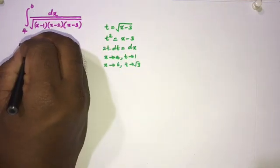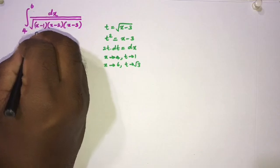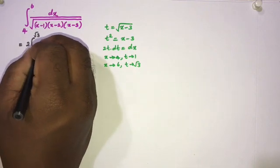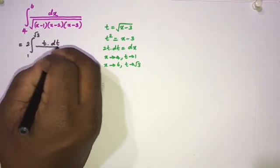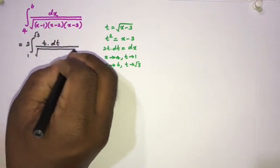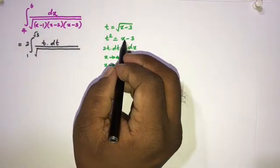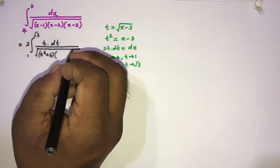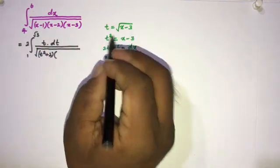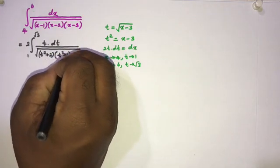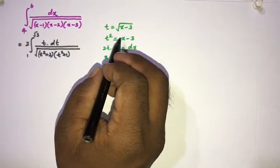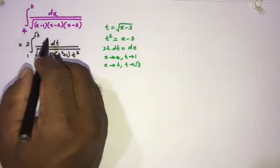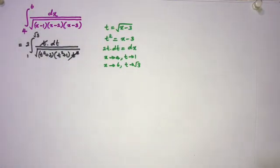The new limits are 1 to √3. Substituting, dx equals 2t dt, so we have 2 times t dt over the square root of (x minus 1)(x minus 2)(x minus 3). Here x minus 1 equals t² plus 2, x minus 2 equals t² plus 1, and x minus 3 equals t². The square root of t² equals t, so the t terms cancel.